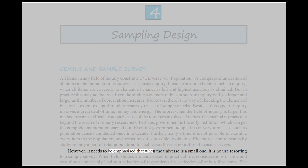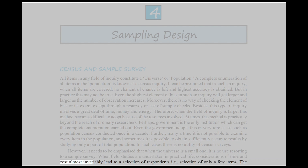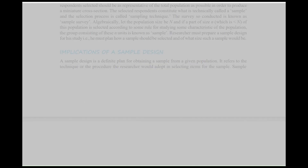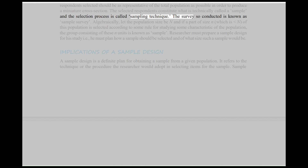However, it needs to be emphasized that when the universe is a small one, it is no use resorting to a sample survey. When field studies are undertaken in practical life, considerations of time and cost almost invariably lead to a selection of respondents, i.e. selection of only a few items. The respondents selected should be as representative of the total population as possible in order to produce a miniature cross-section.